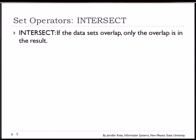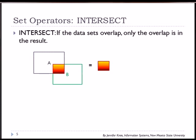The intersect command is only going to give you the data where the two data sets overlap. So we see that represented here. Data set A, data set B, where they overlap, that would be our result.